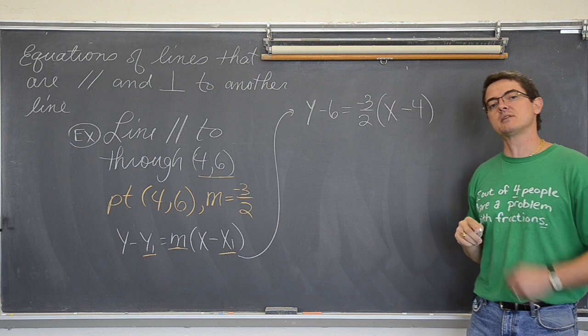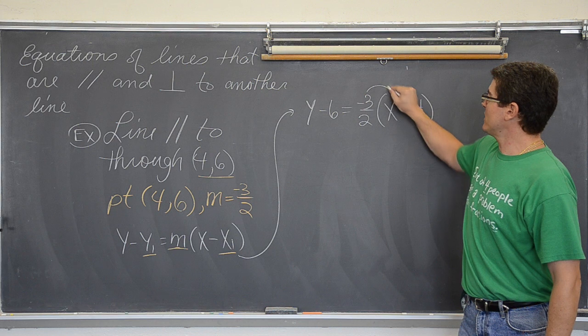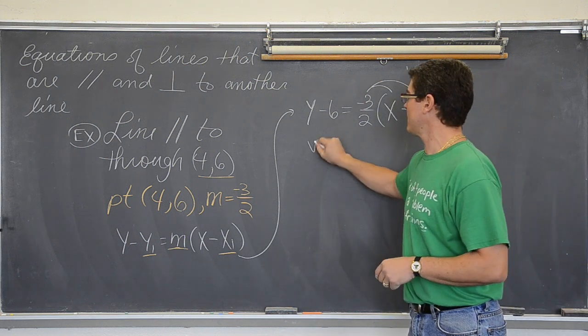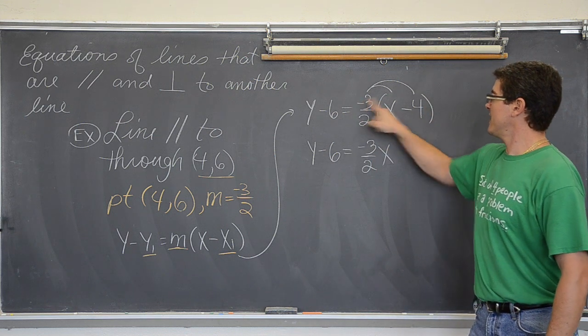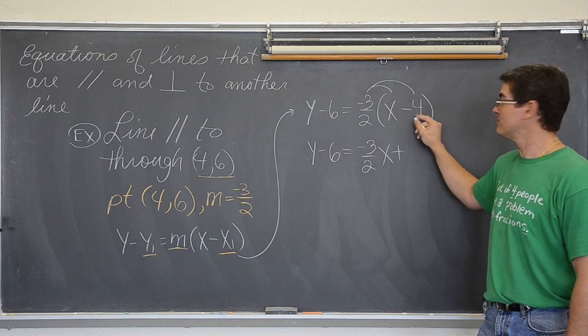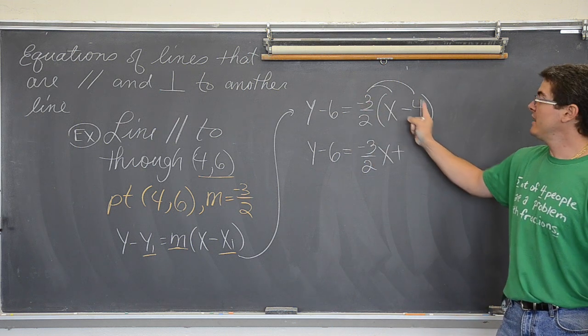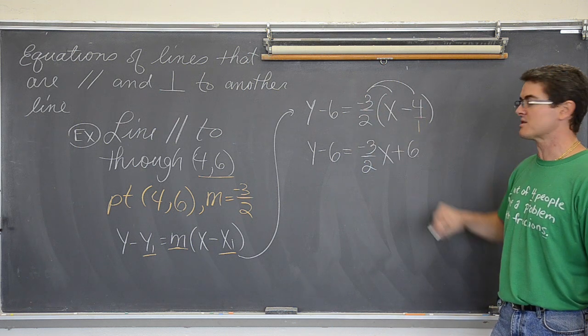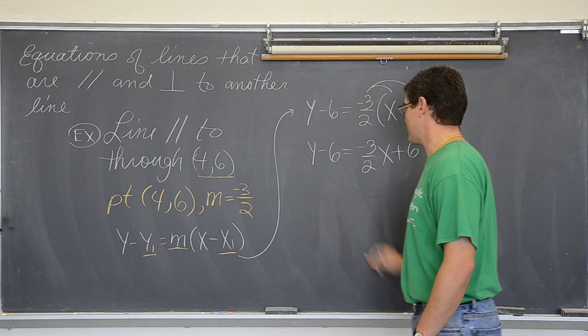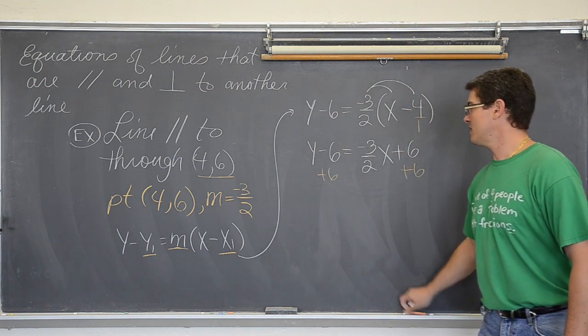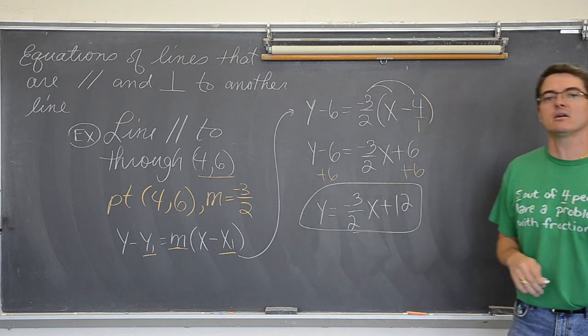This is in point slope form. A lot of textbooks will not be happy or teachers will be happy if you leave it in this form. So I am going to distribute this through and put it in slope intercept form which I will ask my students to do. Negative three halves times one is negative three halves x. Negative times negative is positive. Negative three times four over one. Because this is a fraction. So three times four is twelve. And twelve divided by two is equal to six. So plus six. I need to take this negative six. Any time you move things over or under the equal sign you have to do the opposite. So I am going to add six to both sides and get y equals negative three over two x plus twelve. And I have the equation of my parallel line.